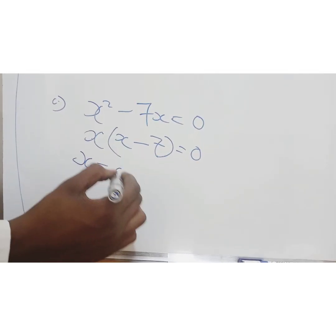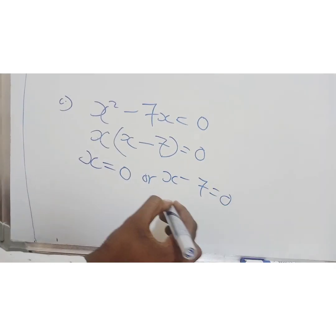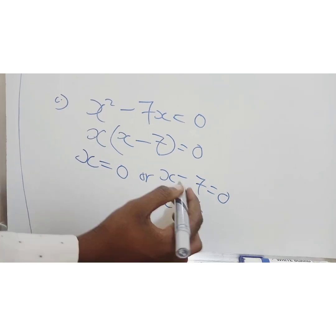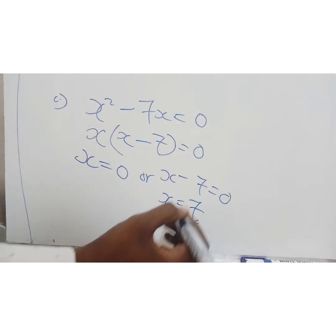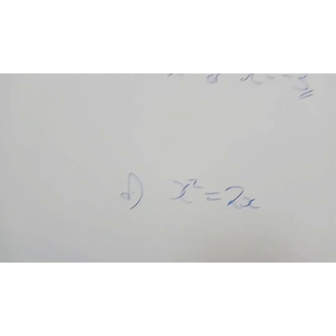This takes us back to our first example. So we just have x equals 0. x minus 7 equals 0. So x equals 7. Remember, it's a negative because the other side becomes a positive. Hope you are getting something.